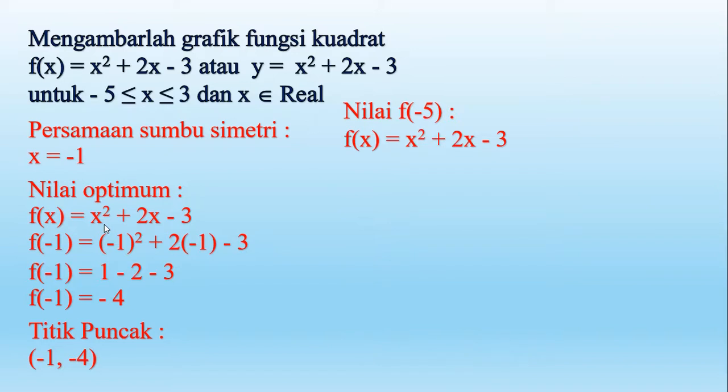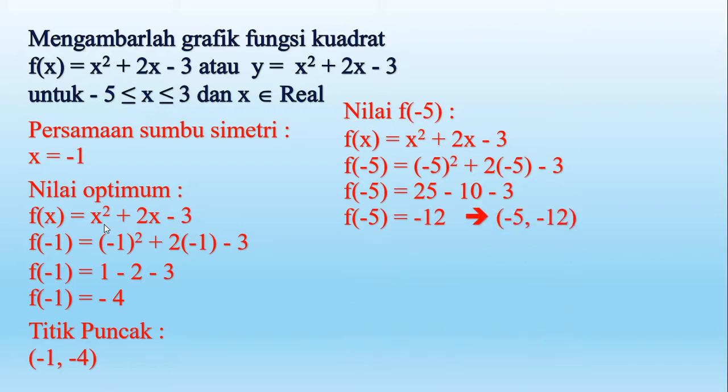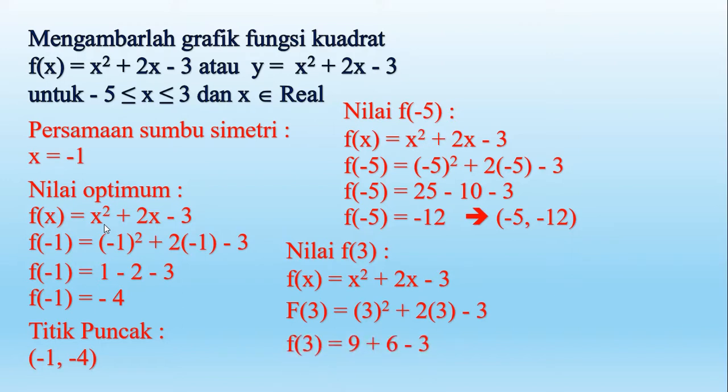Sekarang lihat, nah nilai ujungnya sekarang akan kita cari yaitu f(-5). f(-5) kita masukkan jadi negatif 5 dikuadratkan ditambah 2 kali negatif 5 dikurangi 3, 25 kurangi 10 kurangi 3 berarti sama dengan 25 kurangi 13 yaitu 12. Maka kita hasilkan titiknya (-5, 12). Kita cari nilai f(3) ya, f(3) berarti 3 kuadrat tambah 2 kali 3 kurangi 3, 9 tambah 6 kurangi 3, 15 kurangi 3 yaitu 12. Jadi titiknya yaitu (3, 12).